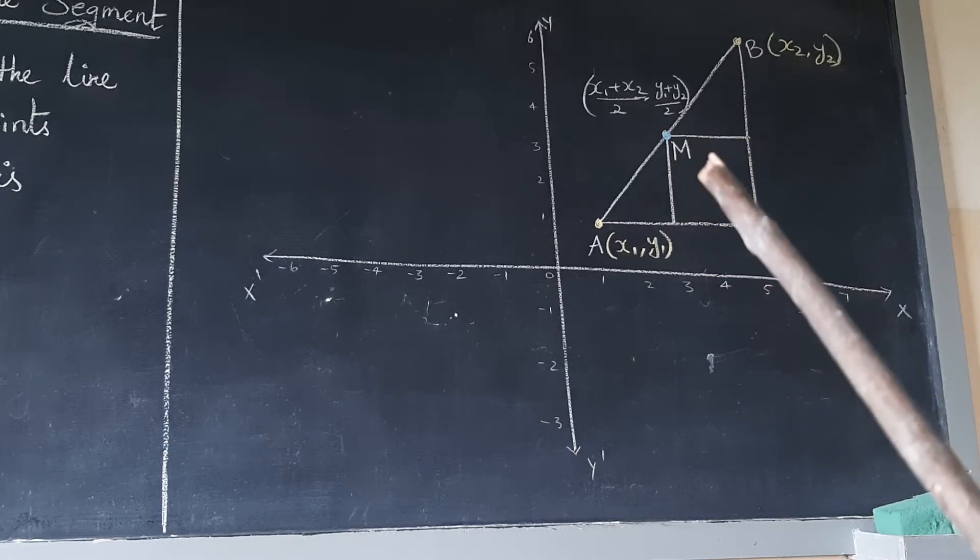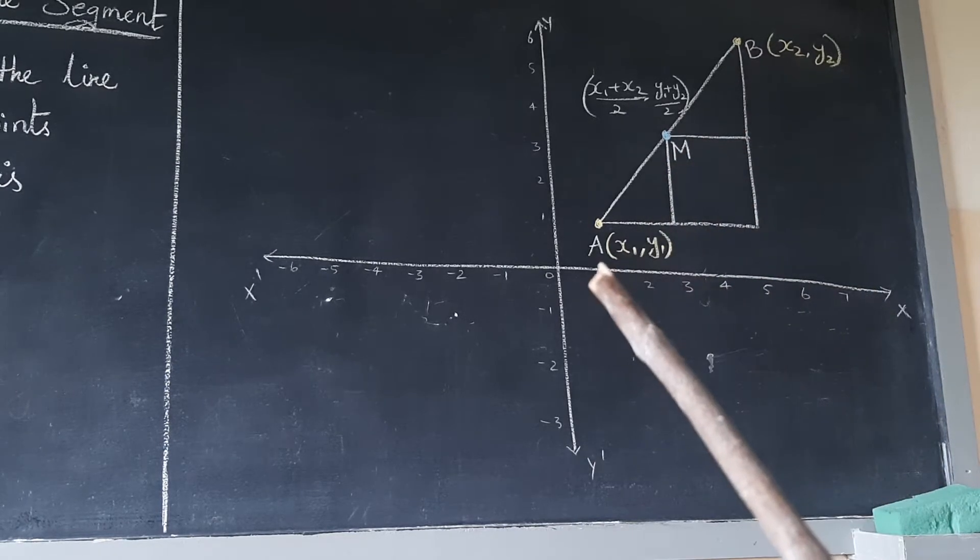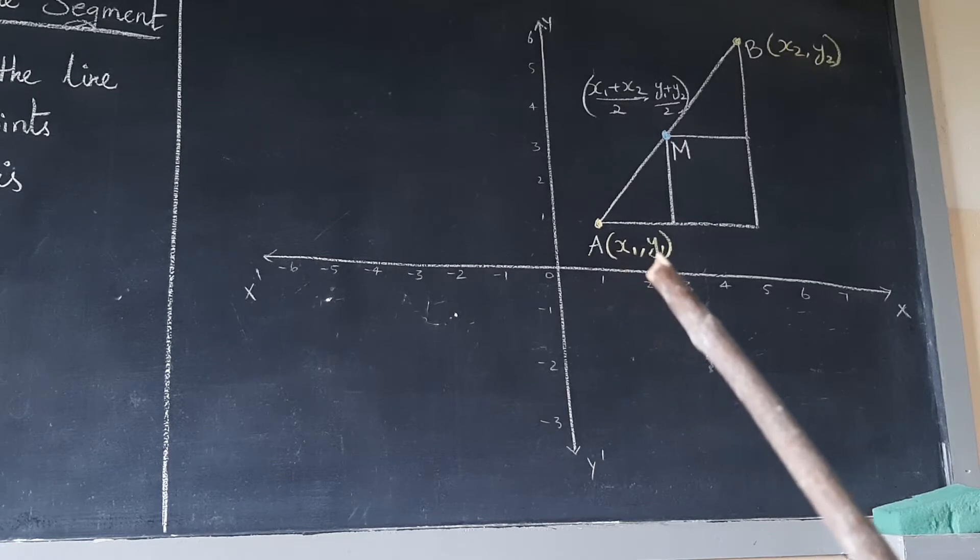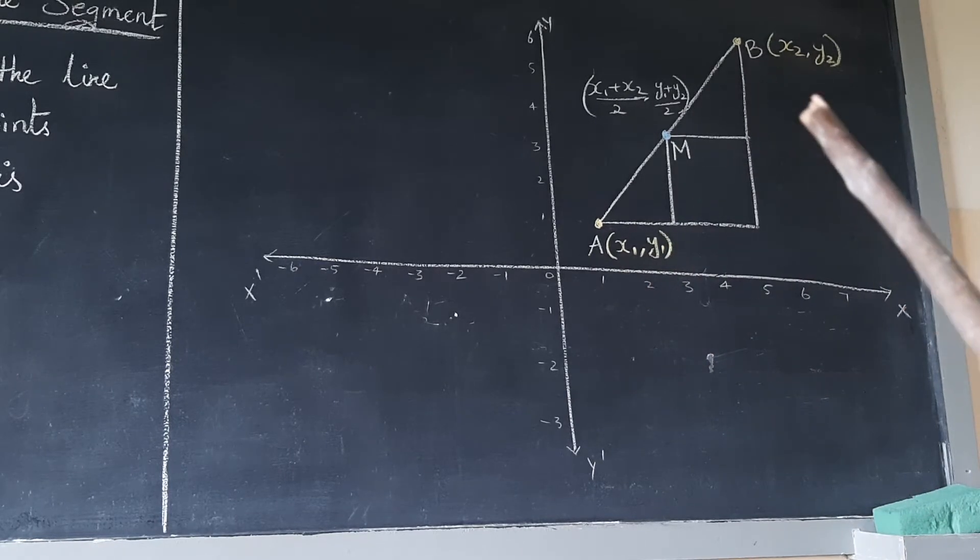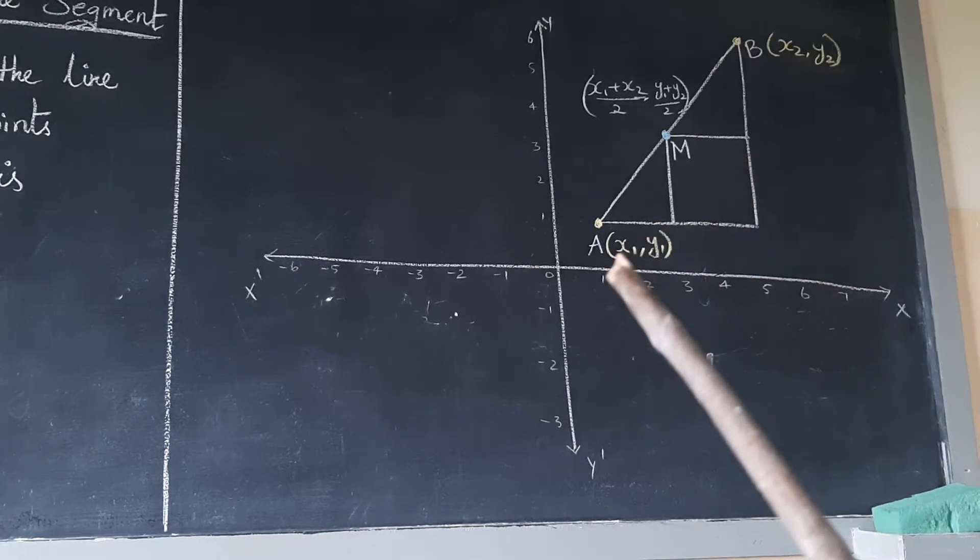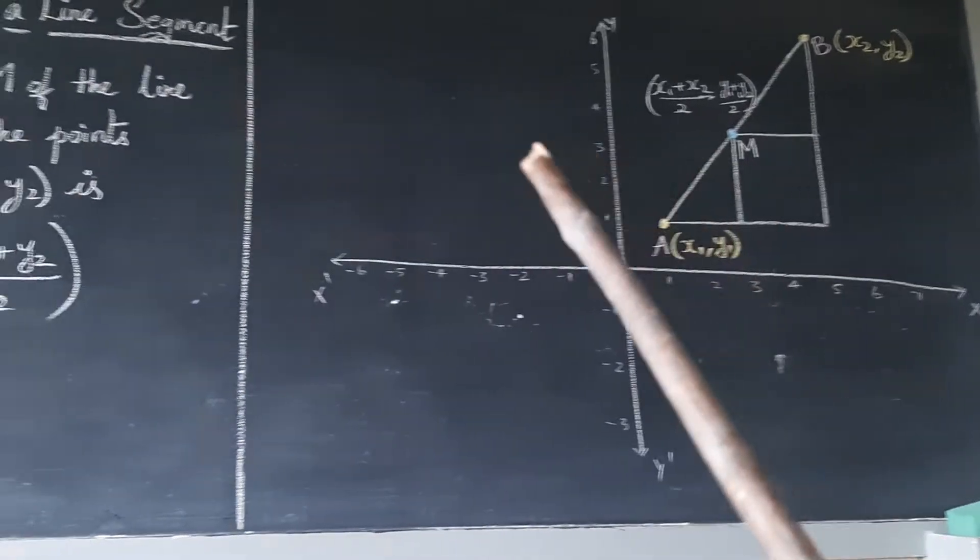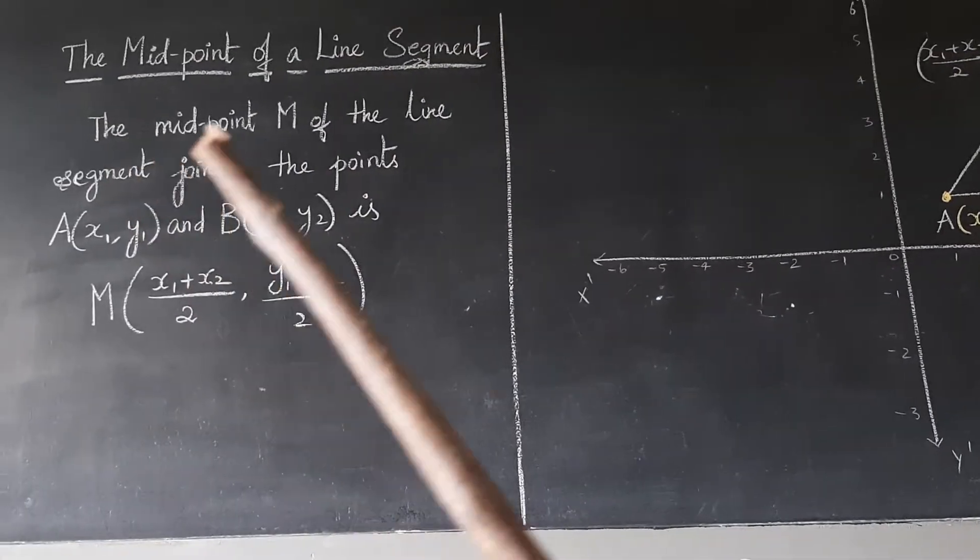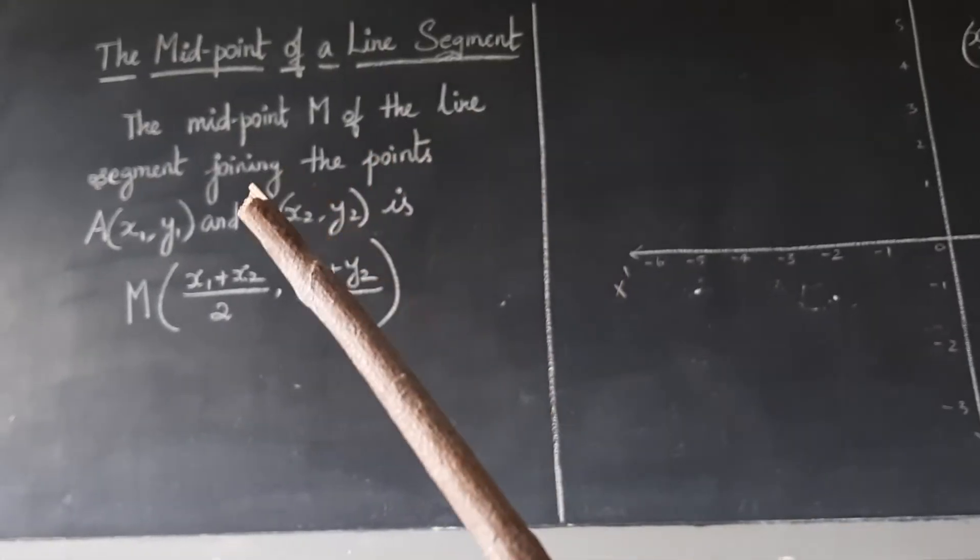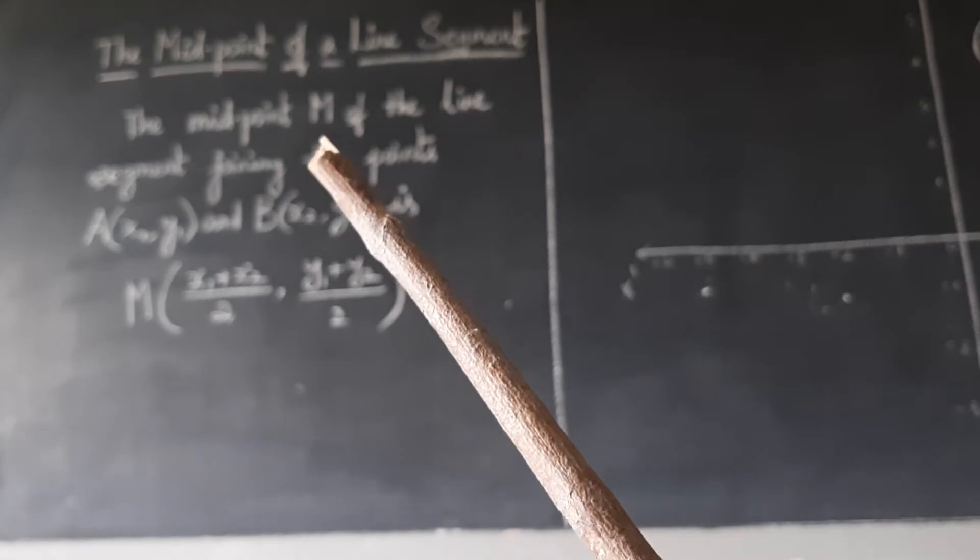M is the midpoint. Point A has coordinates (x1, y1) and point B has coordinates (x2, y2). So we need to find the midpoint of the line segment joining the points.